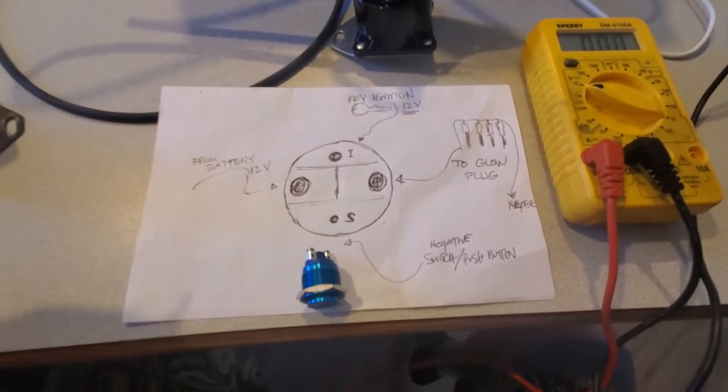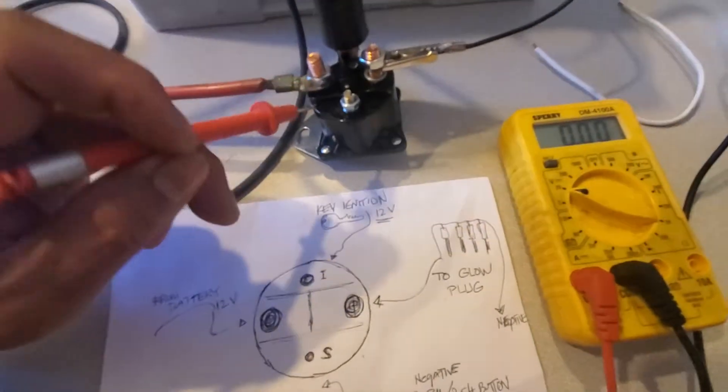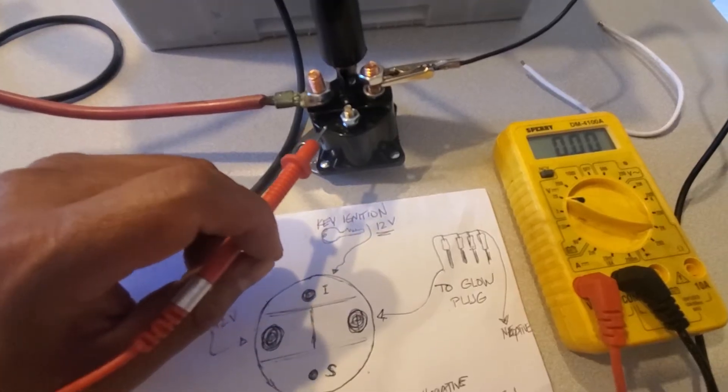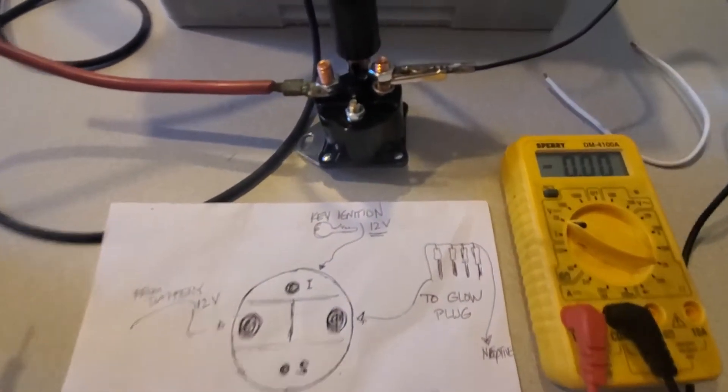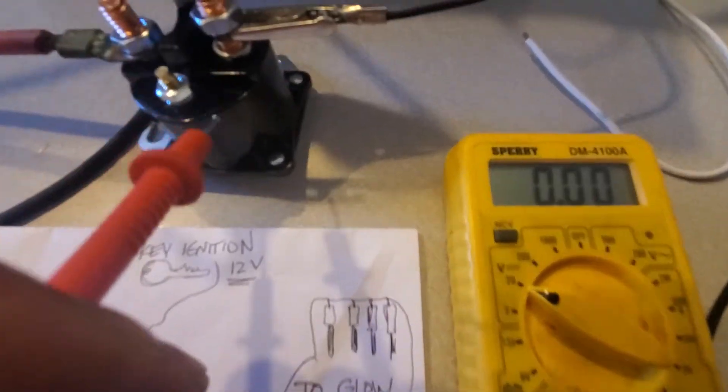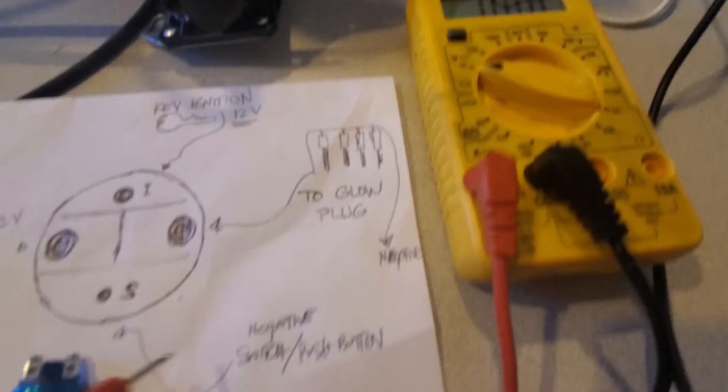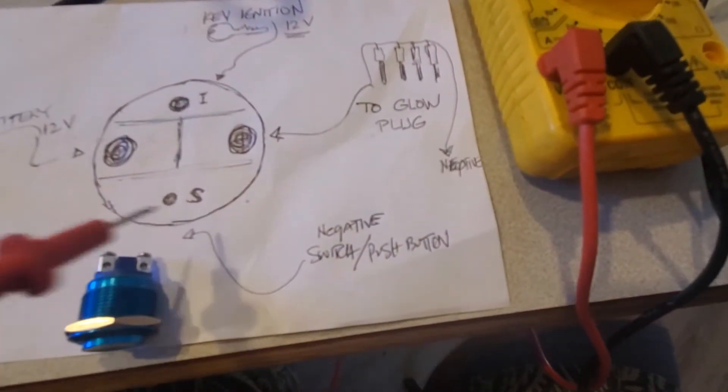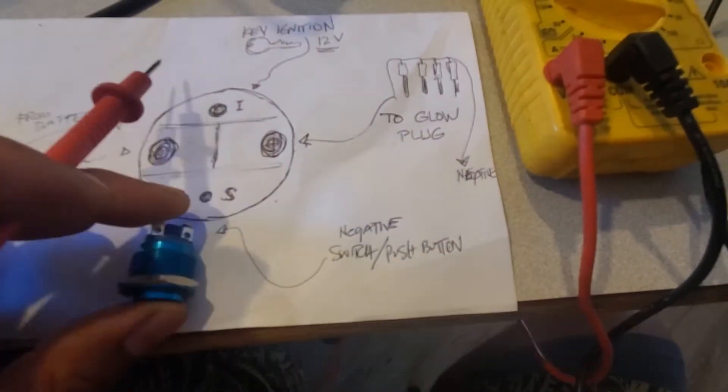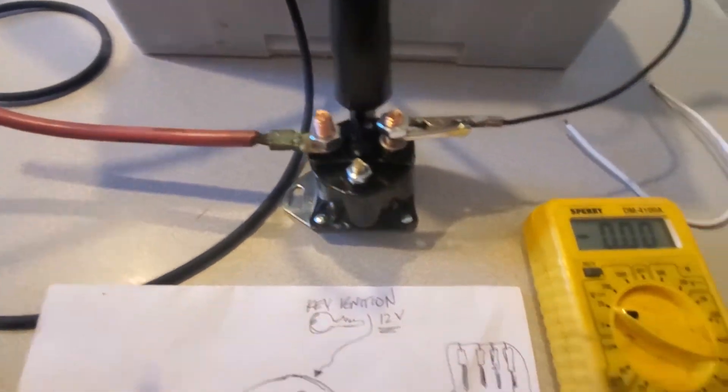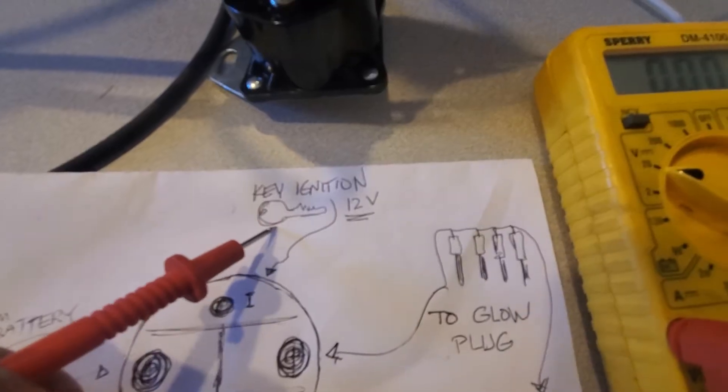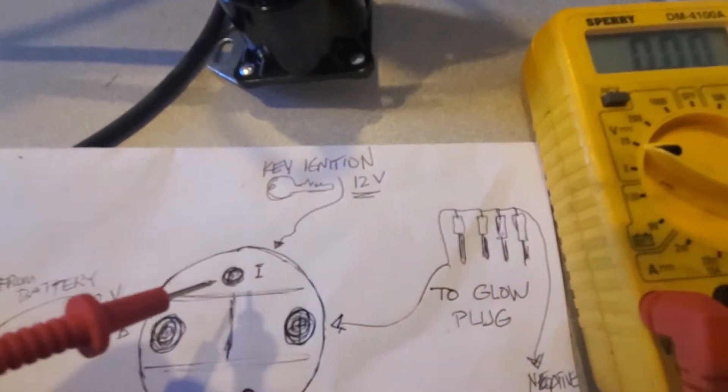Alright YouTube, I got this glow plug relay or glow plug solenoid. As you can see, there's an S, which means for the switch post button switch right there. And then the ignition—that's for when you turn on your key in your car. There's 12 volts supplying on the small side.